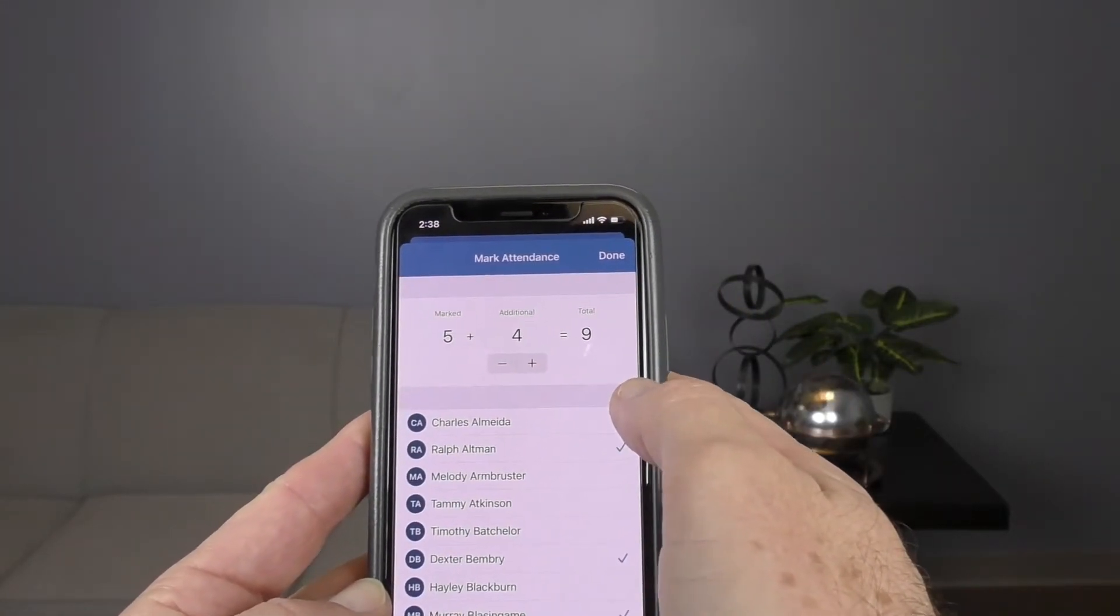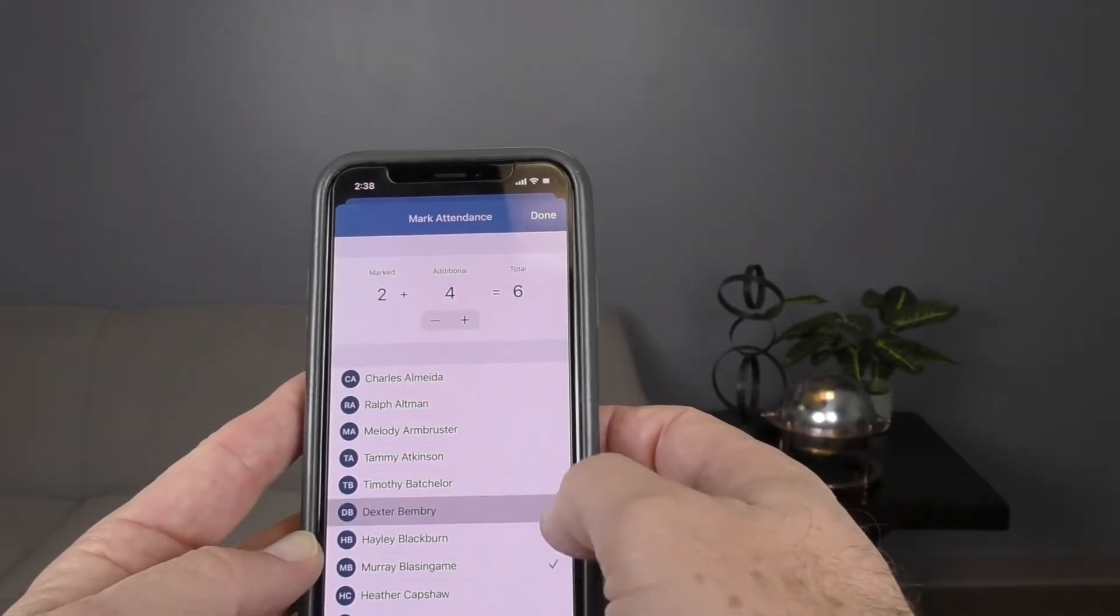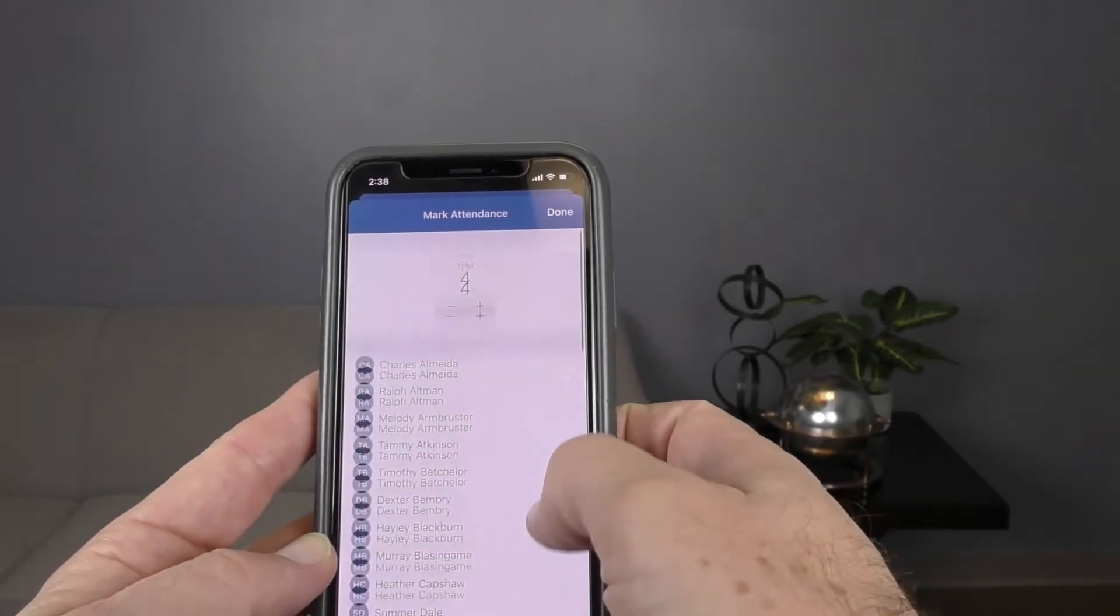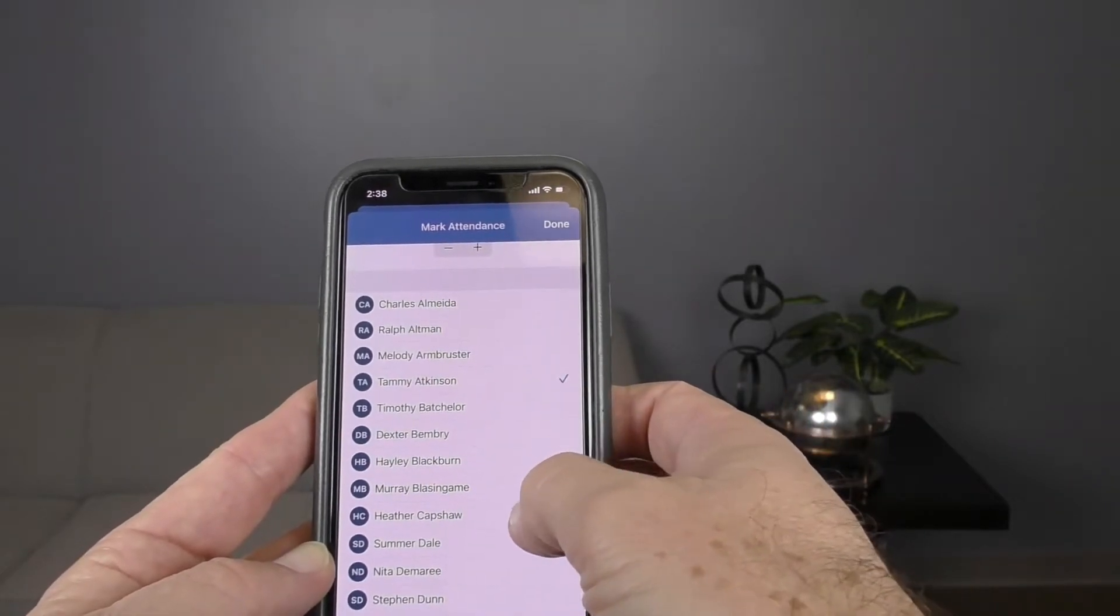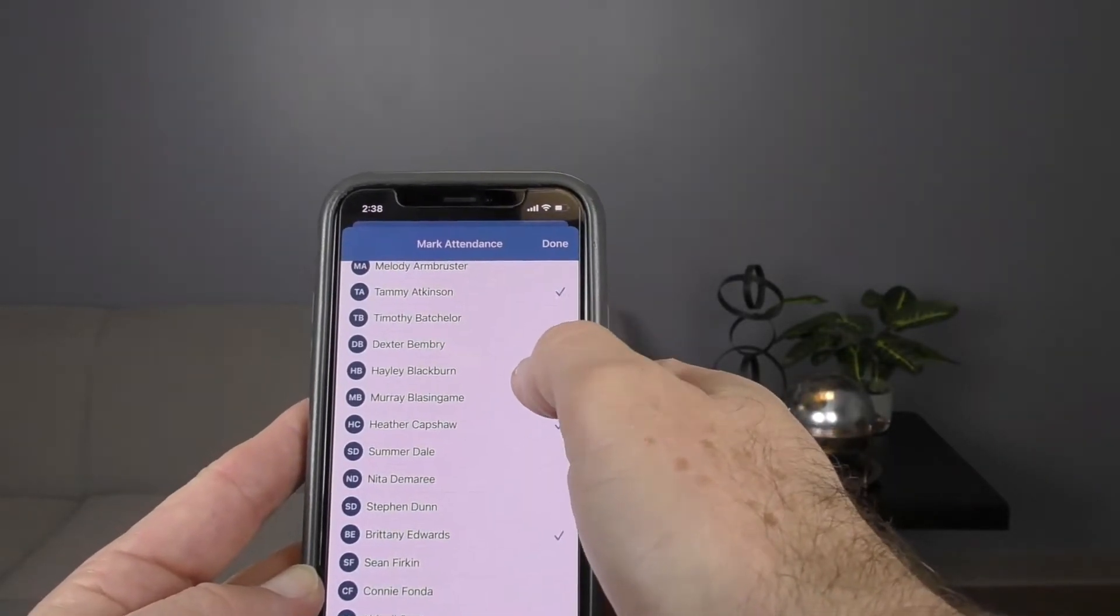Once I choose that, then I'm going to choose the Sunday that I want to mark attendance for. So I click on that Sunday, which was this past Sunday. Then you'll notice that I can check or uncheck the names on my role here.